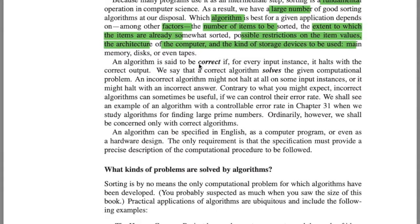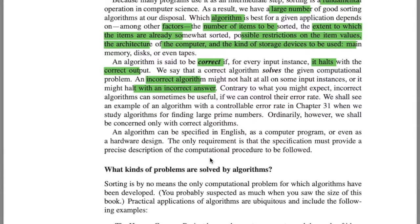Then they talk about correct or incorrect algorithms. An algorithm is correct if it is halting — it stops — and produces the correct output for each input. On the other hand, an algorithm is incorrect if for some input it is not halting, or if it is halting but producing an incorrect result. So if it is producing an incorrect result, then the algorithm is incorrect.